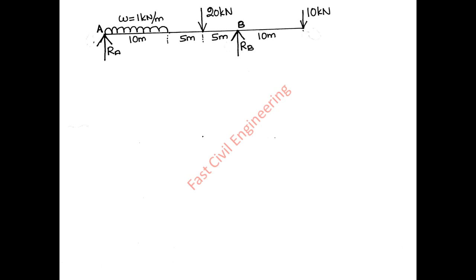Example 3: This is an overhanging beam — another statically determinate case. Find the support reactions RA, HA, and RB. Here HA equals zero, so we only need to consider RA and RB.